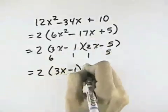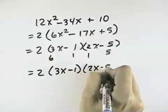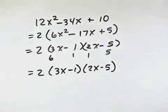So our first factor is 2, our second factor is 3x-1, and our third factor is 2x-5. None of those can be broken down any further.